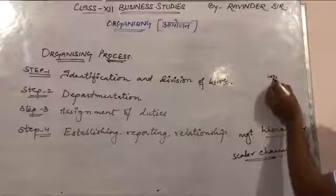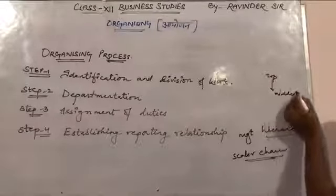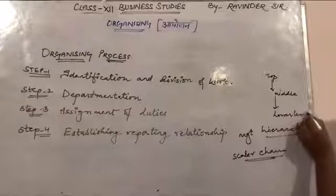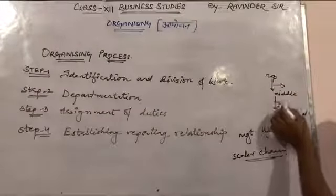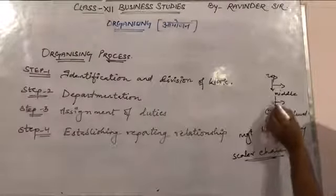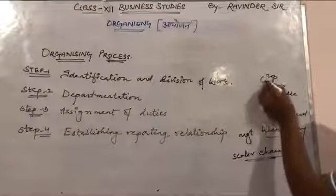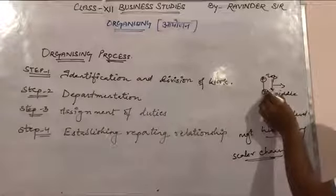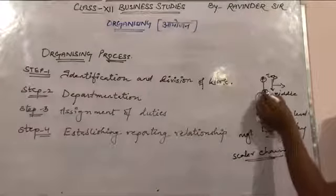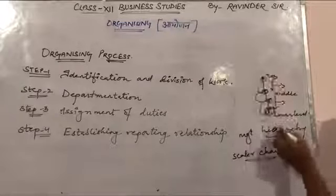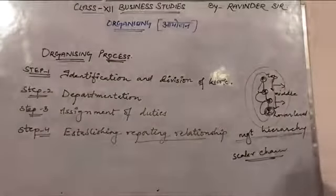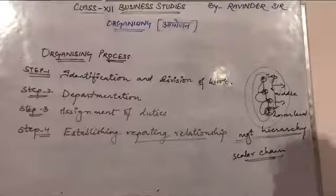The management hierarchy consists of top level, middle level, and lower level. This structure shows who is above whom — the boss is at the top and subordinates work below. This is the management hierarchy, also called establishing reporting relationships. It clarifies who will work on what, who your boss is, and who your subordinates are.